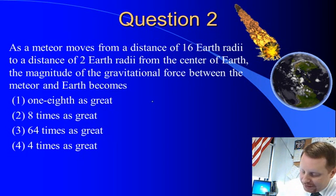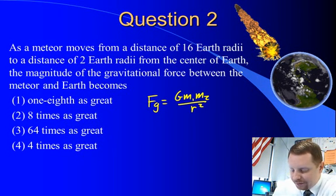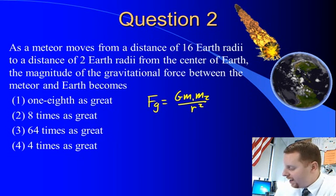Well, the way I'd figure this out is let's start with our equation. Fg equals g m1 m2 over r squared, Newton's Law of Universal Gravitation. Now, if we're cutting the radius from 16 Earth radii to 2 Earth radii, we're cutting it in eighths, right?